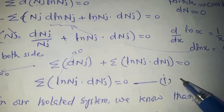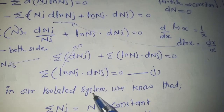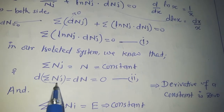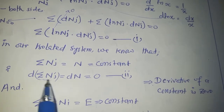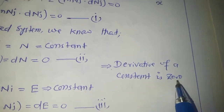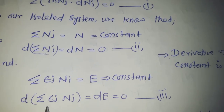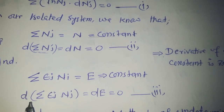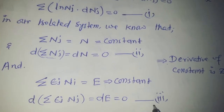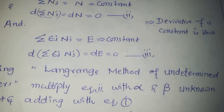In our isolated system, the total number of particles is constant, so differentiating it gives 0 — the derivative of a constant is 0. Similarly, the total energy of the system is constant, so differentiating it also gives 0 since no change is possible. This gives us equation 3.